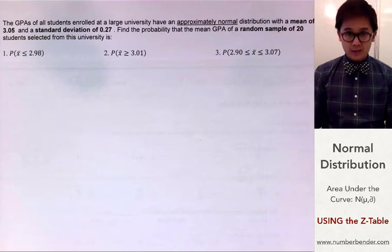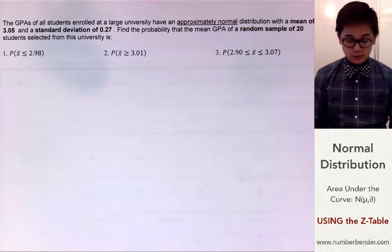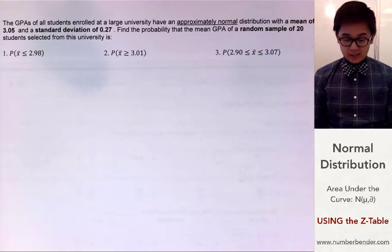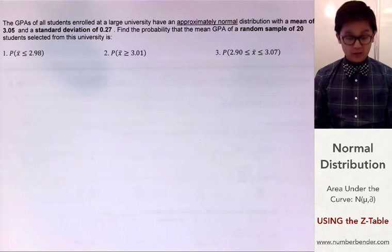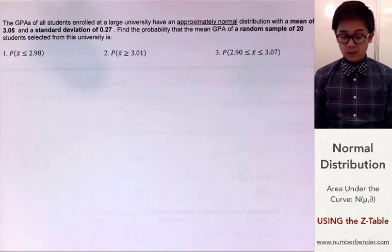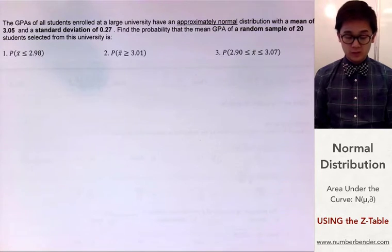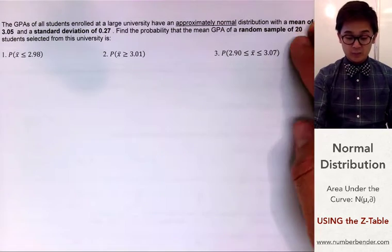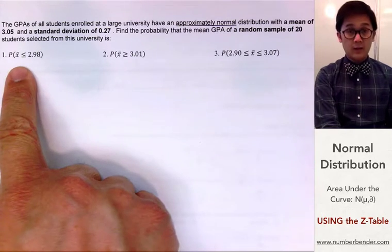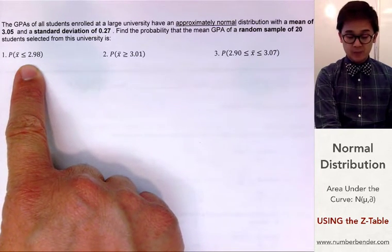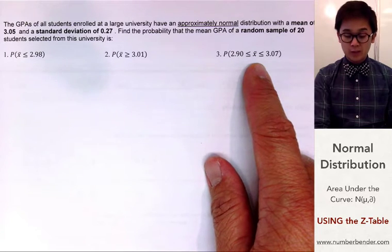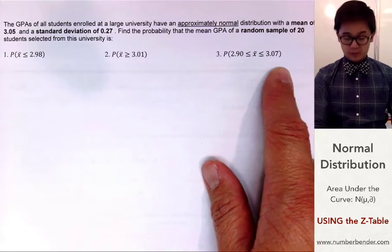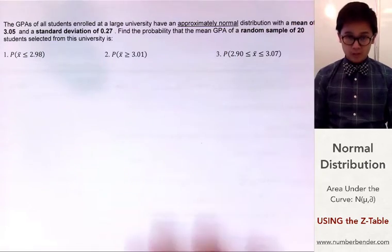Let's start with the first problem. We have the GPAs of all students enrolled at a large university, said to be approximately normally distributed with a mean of 3.05 and standard deviation of 0.27. We need to find the probability that the mean GPA of a random sample of 20 students is: less than 2.98, greater than 3.01, and between 2.90 and 3.07.